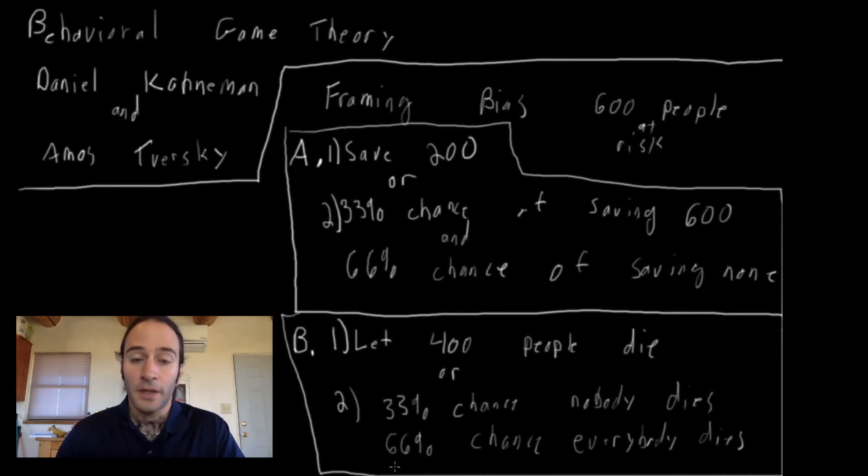Now, the interesting part is that when people were presented with decision problem A, 72% of people chose option one. However, when they were presented, now these are different people, but when they were presented with option B, only 22% chose option one.